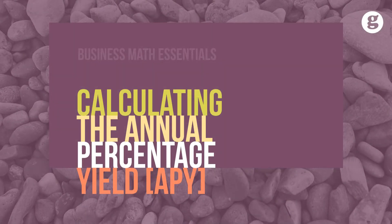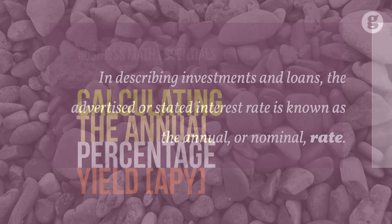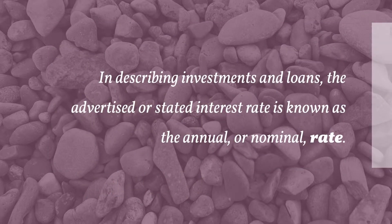Let's take a look at how to calculate the annual percentage yield, known as APY. In describing investments and loans, the advertised or stated interest rate is known as the annual or nominal rate.